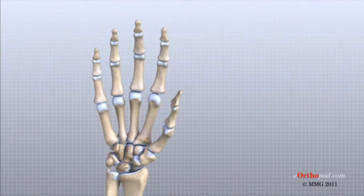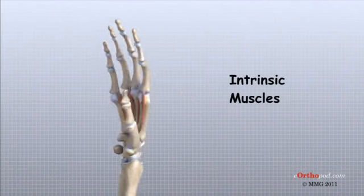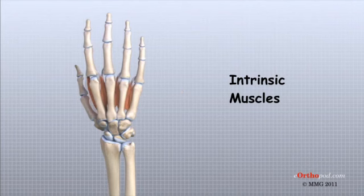The smallest muscles that originate in the wrist and hand are called the intrinsic muscles. The intrinsic muscles guide the fine motions of the fingers by getting the fingers positioned and holding them steady during hand activities.